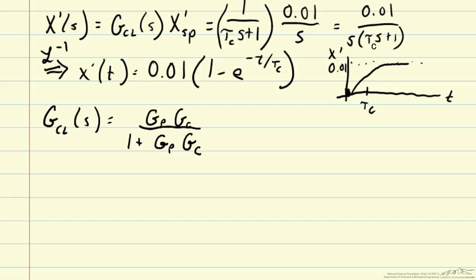And now we can solve for gc, our controller transfer function, as a function of gp, our process transfer function, and our desired closed-loop behavior.